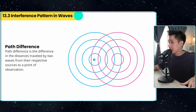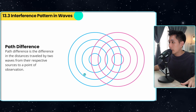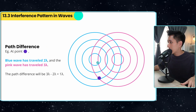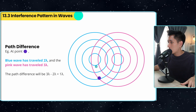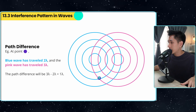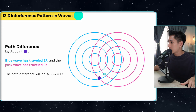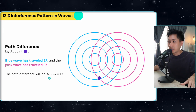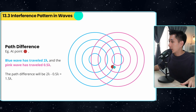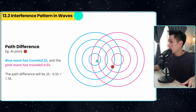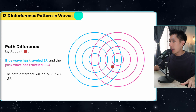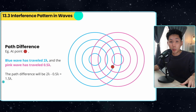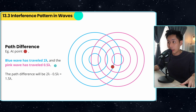In this diagram, let's say this is a source — here is one wavelength, two wavelengths, three wavelengths. At this purple colored dot, the blue wave has traveled two wavelengths and the pink wave has traveled three wavelengths. Because of that, the path difference is three minus two wavelengths, which equals one wavelength. For the red dot, the blue wave has traveled two wavelengths and the pink wave has traveled only 0.5 wavelengths, so the path difference is 1.5 lambda.